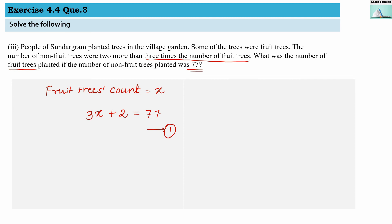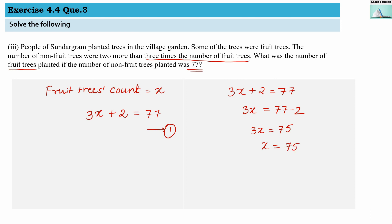So 3x + 2 = 77. Moving 2 to the other side: 3x = 77 − 2, which gives 3x = 75. So x = 75 ÷ 3, since 3 moves to the denominator. x = 25. So the count of fruit trees is 25.